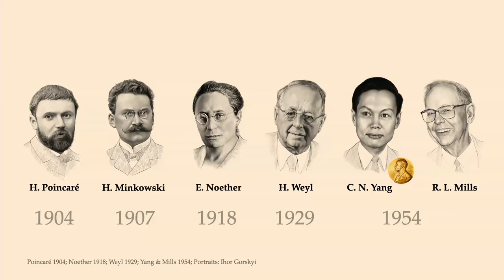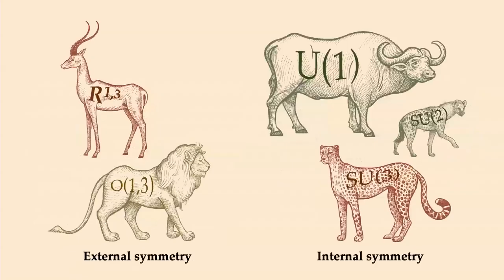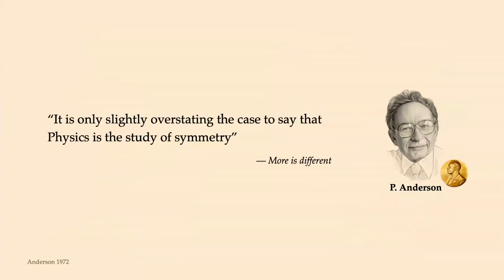Noether introduced the notion of gauge symmetry, used in quantum mechanics and to create the unification of different forces in what we now know as the Standard Model of particle physics. Basically, all physics we know can be derived from different groups: internal symmetries of quantum fields giving rise to different forces, and external symmetries of spacetime. As Nobel laureate Philip Anderson laconically put it: it is only slightly overstating to say that physics is the study of symmetry.